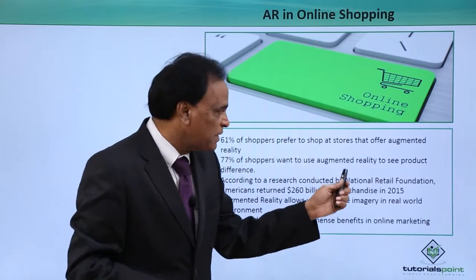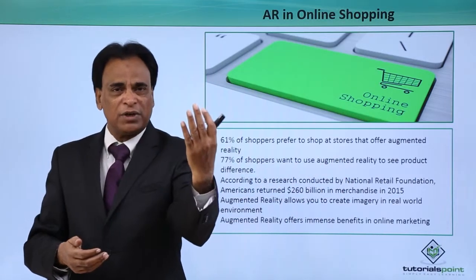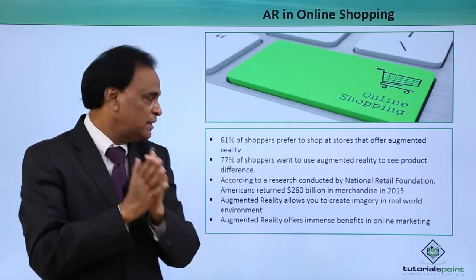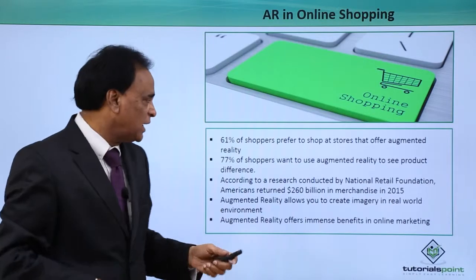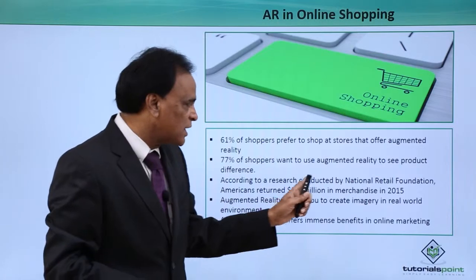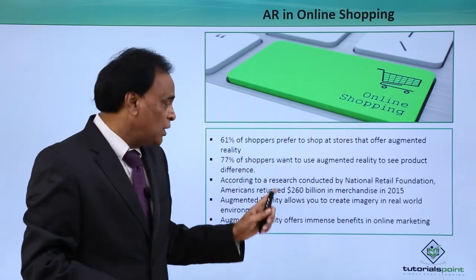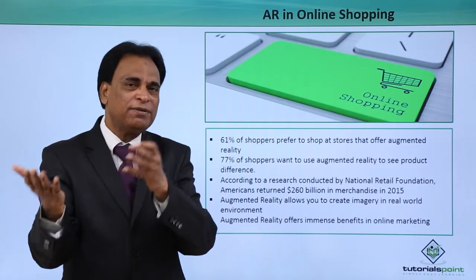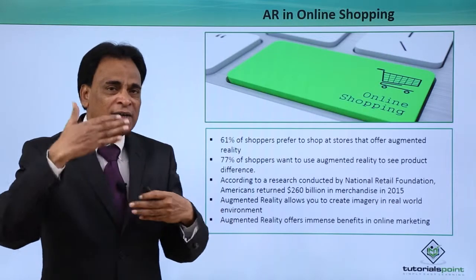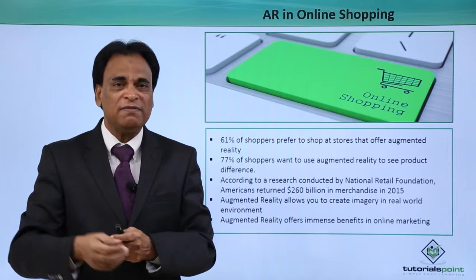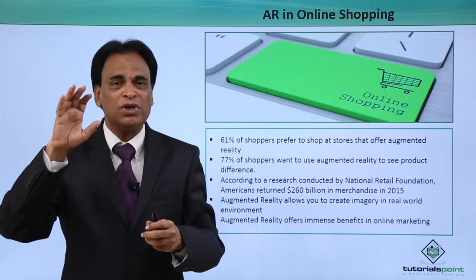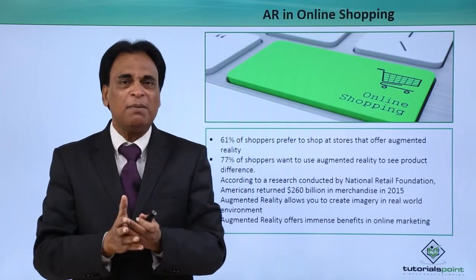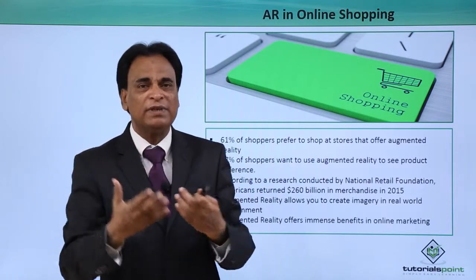77 percent of shoppers want to use augmented reality to see product differences — comparing an artificially created product view with the real product available in-store or online. According to research by the National Retail Foundation, Americans returned 216 billion dollars in merchandise in 2015, simply because what they see online is different from what they actually receive. This is precisely why augmented reality is used — to provide complete information by combining digital and real-world views.